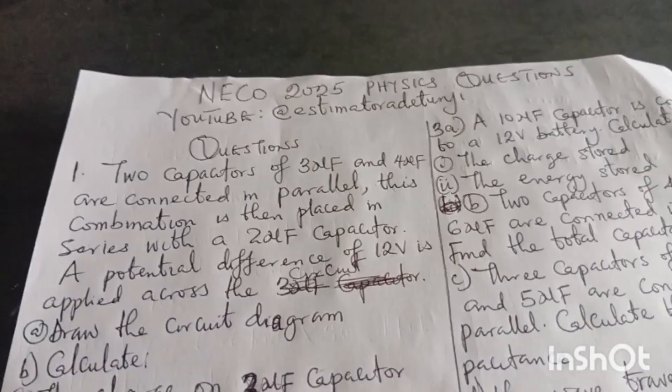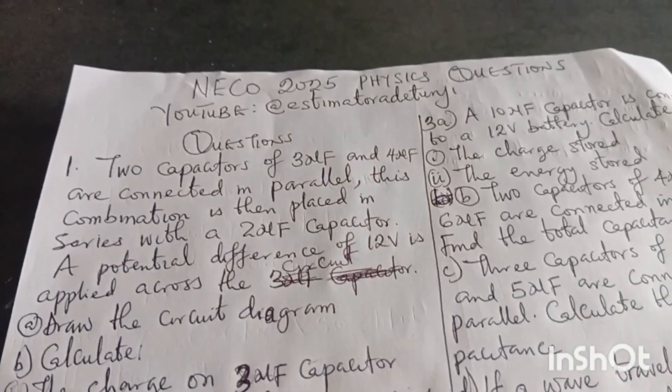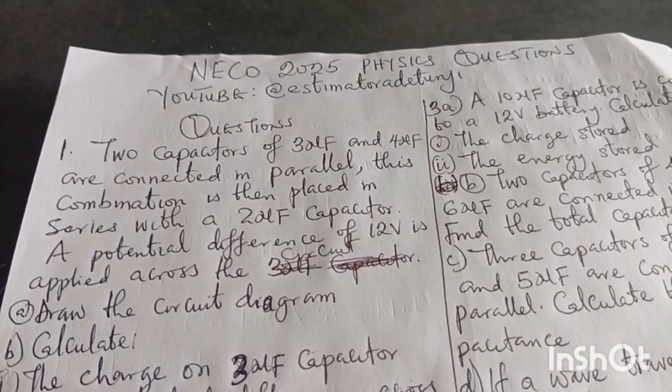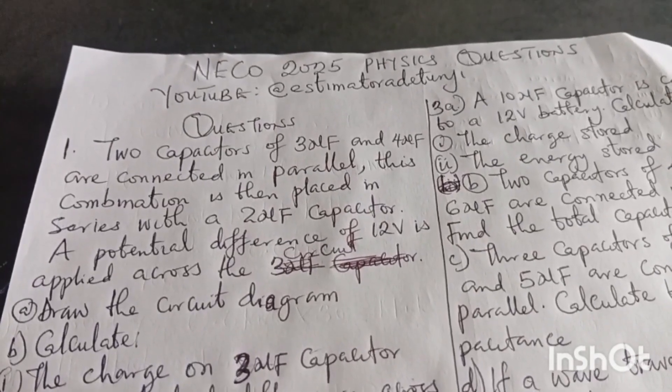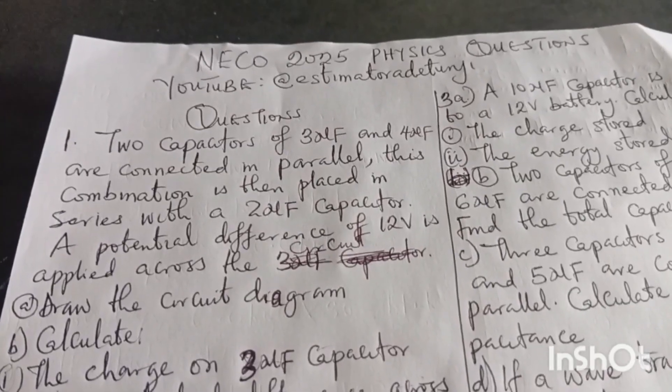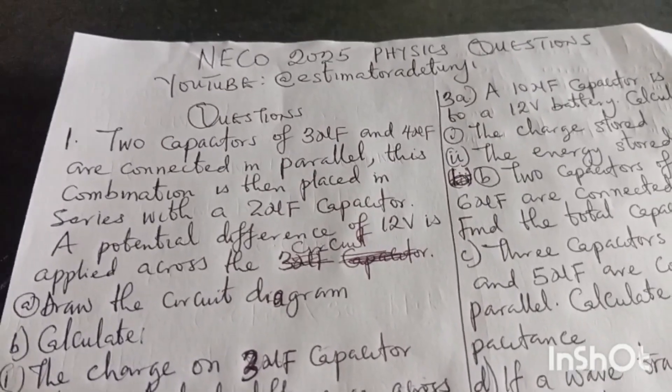The first question here is talking about capacitors. Two capacitors of 3 microfarad and 4 microfarads are connected in parallel, and this combination is then placed in series with a 2 microfarad capacitor.